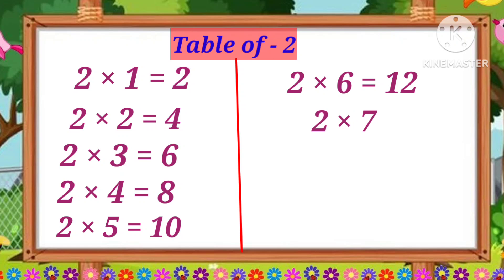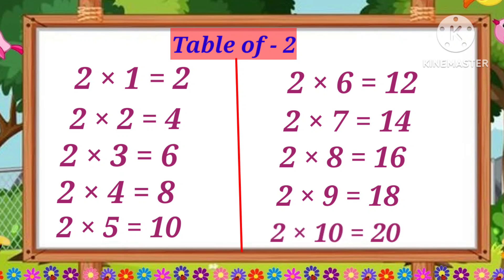Two sevens are fourteen. Two sevens are fourteen. Two eights are sixteen. Two eights are sixteen. Two nines are eighteen. Two nines are eighteen. Two tens are twenty. Two tens are twenty.